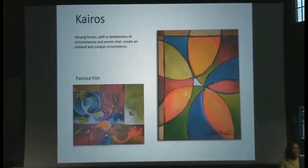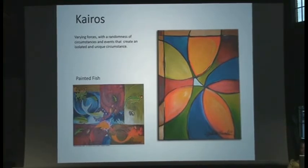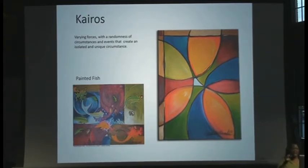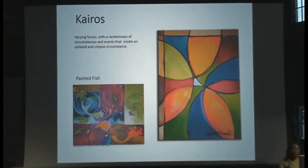And then there's kairos. Varying forces, random circumstances, almost like an accident — but it all kind of comes into one isolated event. And that light blue in the center is that isolated event. So all of that argument, all of that directing, kind of came to that one point.